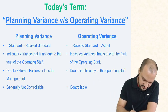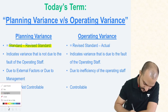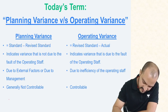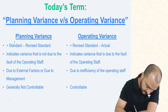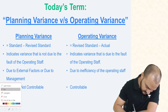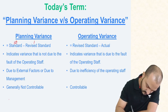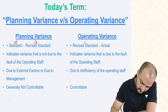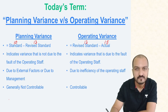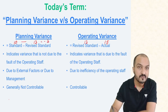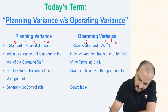Planning variance is the difference between standard and revised standard — for example, between the standard price of 10 and the new market price (revised standard) of 13. While operating variance is the difference between the revised standard of 13 and the actual price of 15. So the 3 rupees extra is planning variance, and the 2 rupees extra is operating variance.